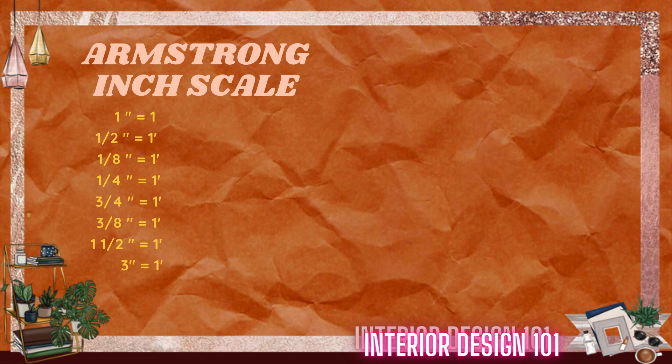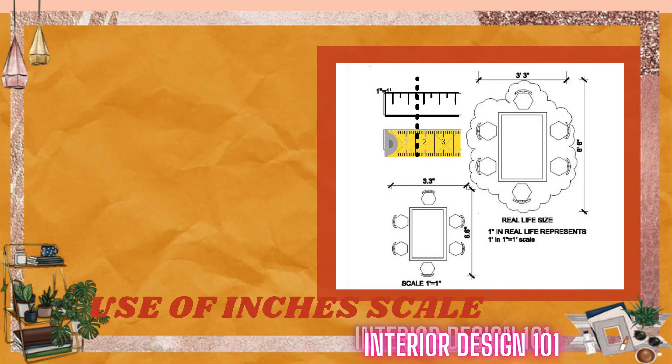These four scales can be used for enlarging a drawing. Let's finally see an example for inches and feet using the same dining table. The size of the dining table is 3 feet 3 inches by 6 feet 6 inches. When drafted at 1 foot equals 1 inch scale, the size measured is 3.3 inches by 6.6 inches. The scales 1.5 inches equals 1 foot and 3 inches equals 1 foot are used to draft and enlarge drawings.